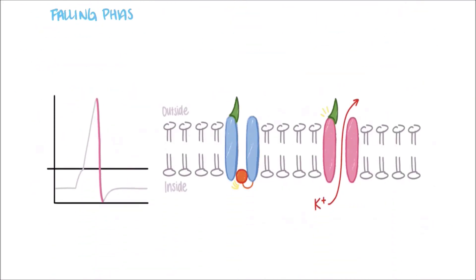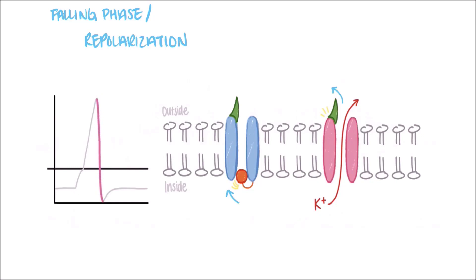At falling phase, or repolarization, the time-dependent sodium inactivation gates start to slowly close. At the same time, the potassium activation gates open. This causes potassium to start flowing out of the cell, as well as sodium to stop entering the cell. Both of these result in a rapid repolarization, where the membrane potential becomes more negative.